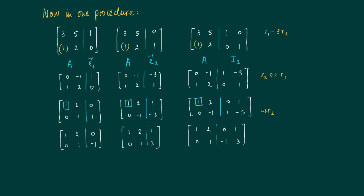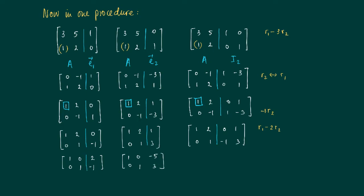Next, we eliminate the remaining off-diagonal entry by subtracting two times row two from row one, making that element zero. After this final step, the left side becomes the identity matrix in reduced row echelon form. On the right-hand side we get 2 on top, minus 1 — and 1 minus 2 times 3 equals minus 5, giving 3. So in the combined matrix we have I2 on the left and [2, -1; -5, 3] on the right.